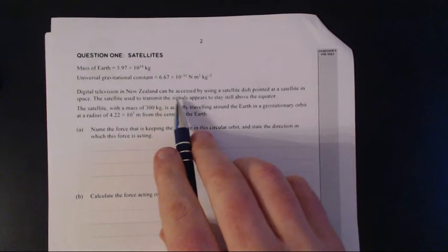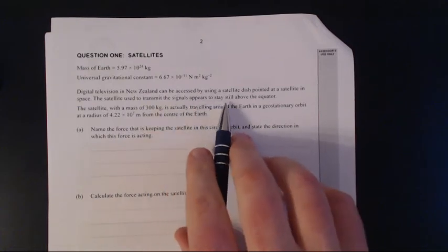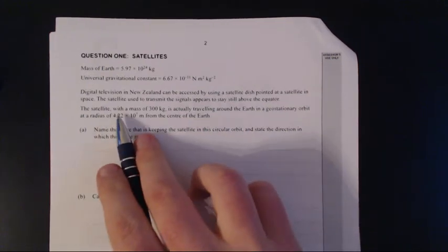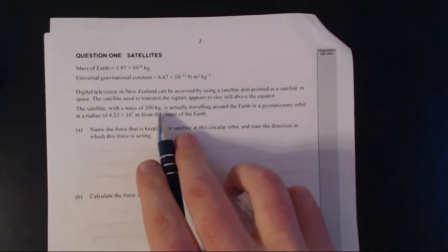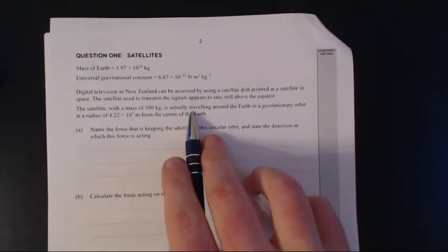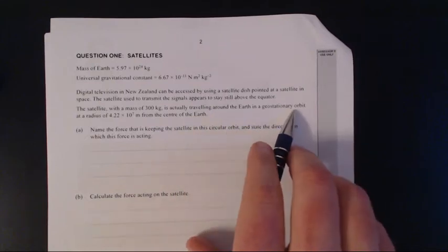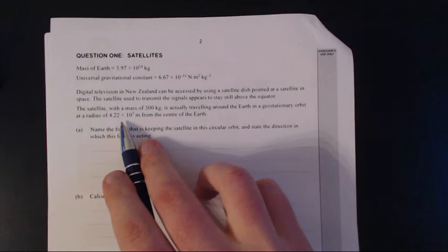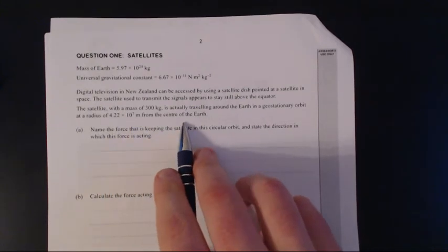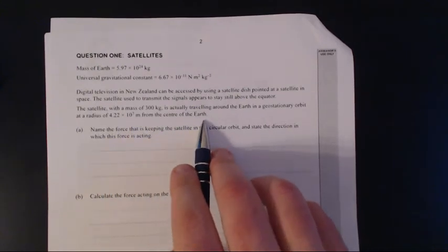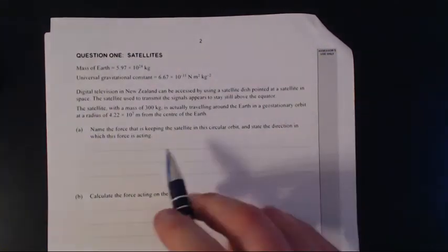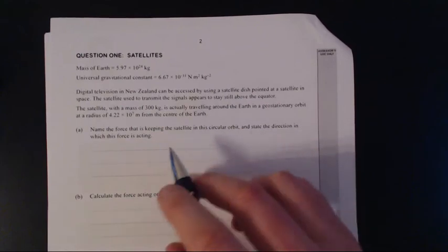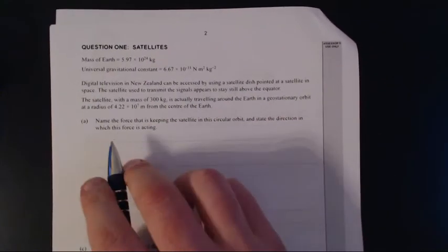Digital television in New Zealand can be accessed by using a satellite dish pointed at a satellite in space. The satellite is used to transmit the signals, appears to stay still above the equator. That tells us it's geostationary. The satellite, with a mass of 300 kg, is actually travelling around the Earth in a geostationary orbit at a radius of 4.22 times 10 to 7 metres from the centre of the Earth. So they've given us distance from the centre of the Earth. The meaning of that is it's the centre of the Earth's mass.